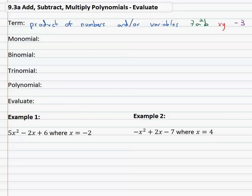Based on the number of terms we have we have special names for them as well. A monomial has one term. The examples that we listed earlier such as 7a²b are examples of monomials because they each have one term.